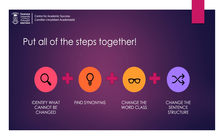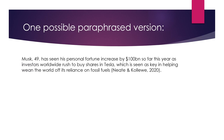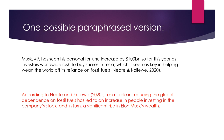Now, let's put all of these steps together to produce a fully paraphrased version of the original sentence. Here's our original, and here is our paraphrased version: 'According to Nate and Kalou, Tesla's role in reducing the global dependence on fossil fuels has led to an increase in people investing in the company's stock and, in turn, a significant rise in Elon Musk's wealth.' One point to note in our paraphrased version is that a narrative citation style has been used. This works the citation into the grammar of the sentence. You can use a variety of reporting verbs to help you do this, such as: states, claims, shows, notes — as in 'Choi and Jones note that' — or 'Patel argues that.'